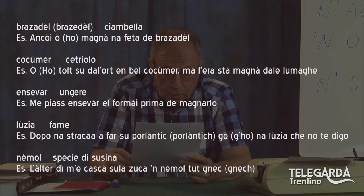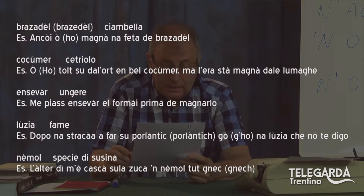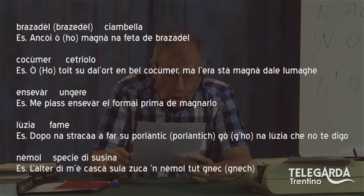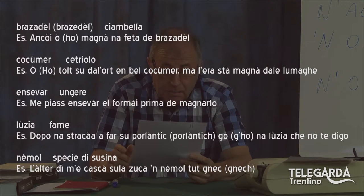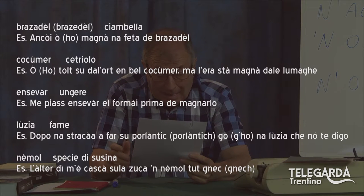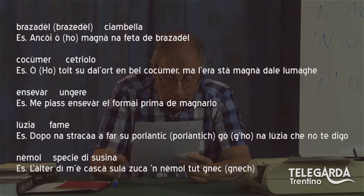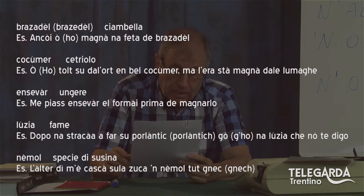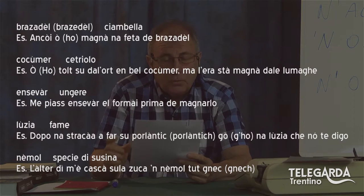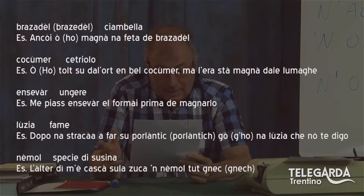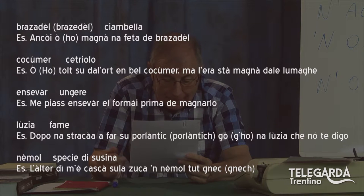Andiamo al secondo esempio: cocumer, el cetriolo. Esempio: O tolt su da l'hort, e bel cocumer, ma l'era sta magnà dalle lumaghe. Cocumer — vedete un bel accento tonico sulla u. Poi 'o' — anche qui la forma arcaica, cioè la o aperta, oppure la o con l'h.